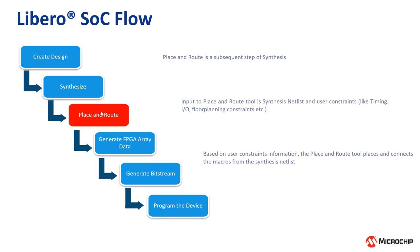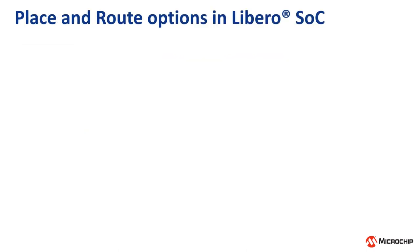As we can see, place and route is a subsequent step of synthesis. Input files to the place and route tool are the synthesis netlist and user constraints like timing, I/O, floor planning, etc. Place and route is a process which places each macro from the synthesis netlist into an available location on the target silicon and connects the macros using routing resources available on the target silicon. Now we will move on to the different configuration options available on the Libero place and route tool.